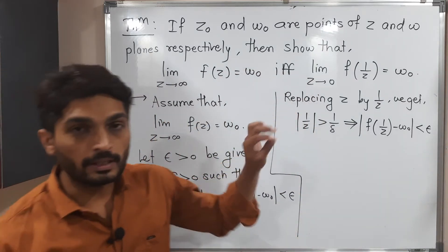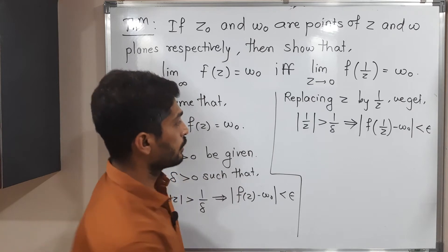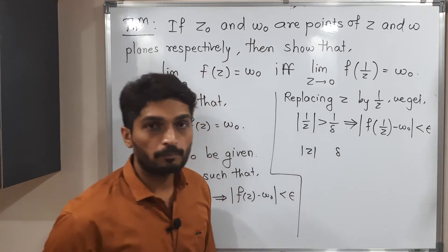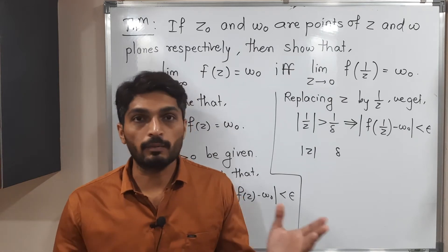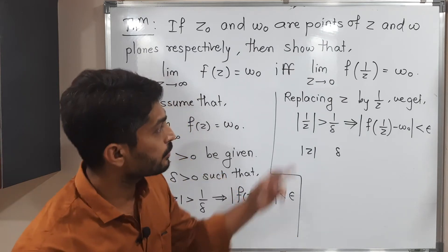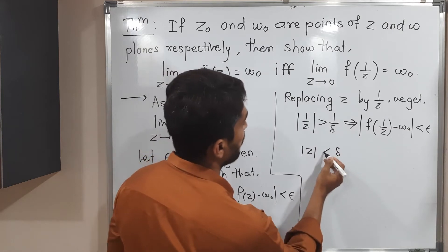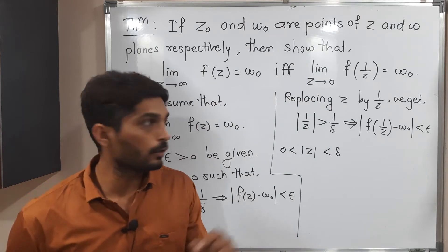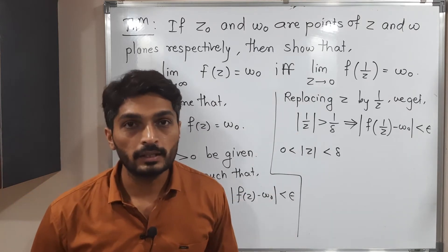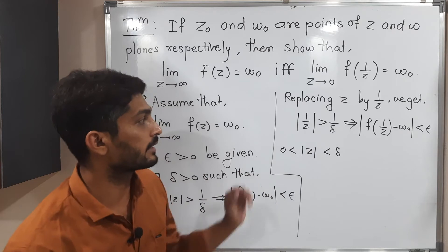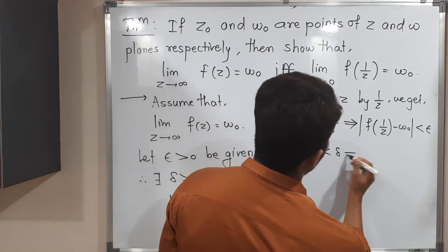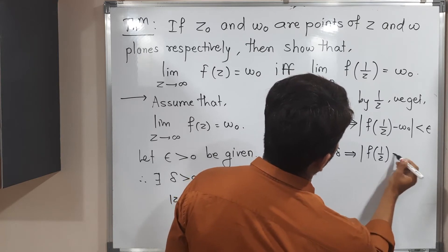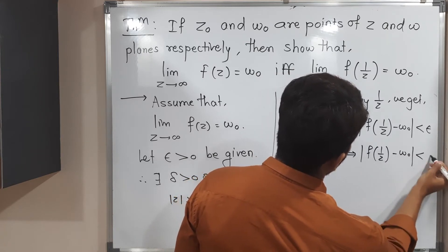If you take the reciprocal of both sides, you get mod z and delta on the respective sides. When we take a reciprocal, the inequality gets reversed — so instead of greater than we get less than. Also, mod z must be greater than 0, since having 0 in the denominator is not possible.